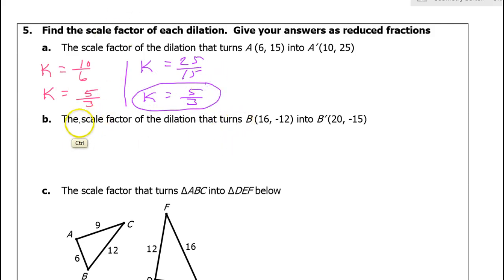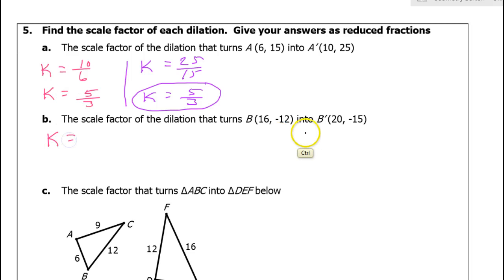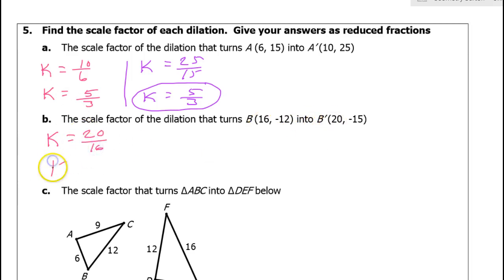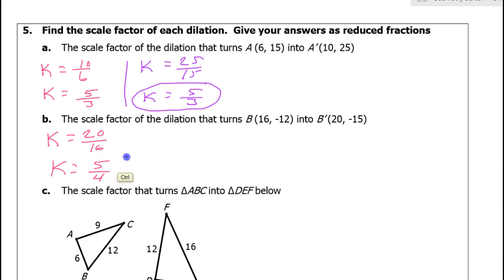For part B, same thing: 20 over 16. Since 4 goes into both, that reduces to 5 over 4. So the scale factor is 5 over 4.